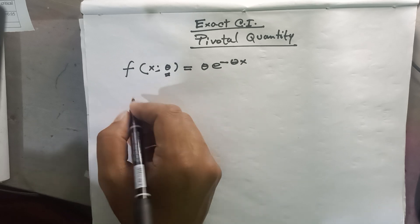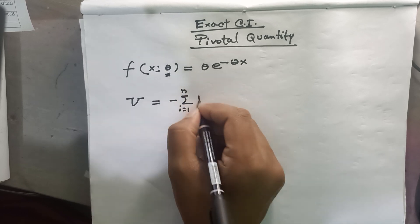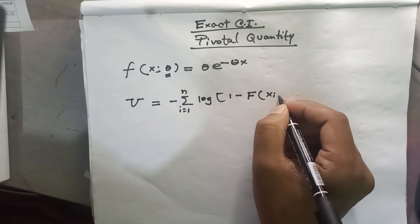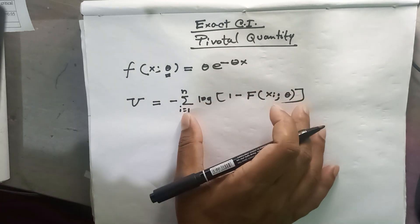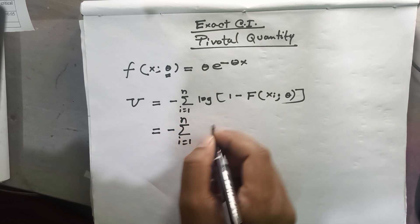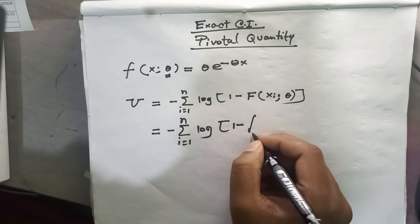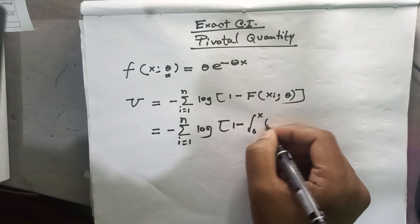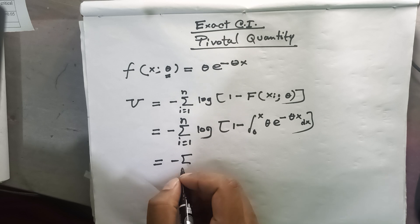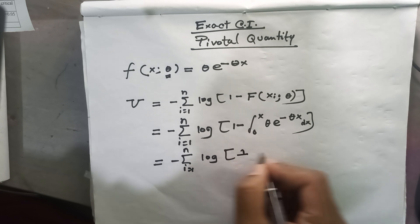First of all, we define the pivotal quantity U as minus summation from i equals 1 up to n of log of one minus F(xi, theta). To derive the PDF, we integrate from zero to x: theta times e to the power minus theta x dx. So U becomes minus summation from i equals 1 to n of log of one minus the integral, where theta is constant.